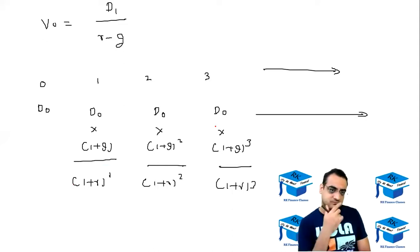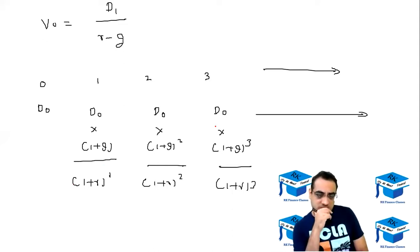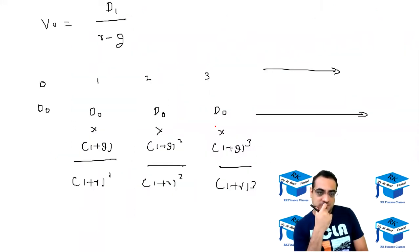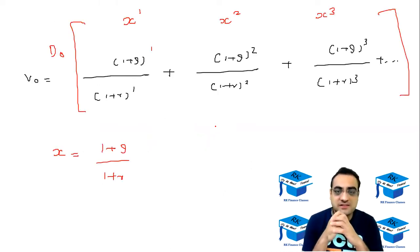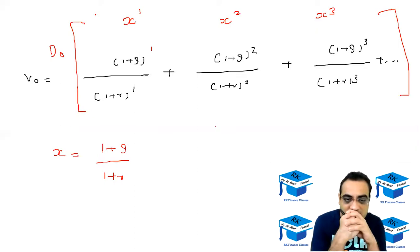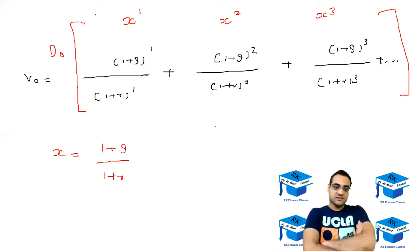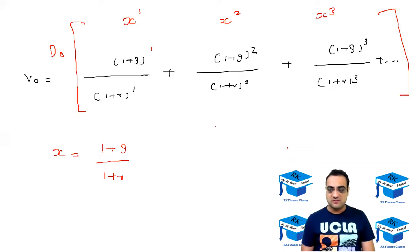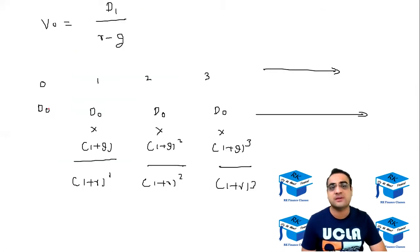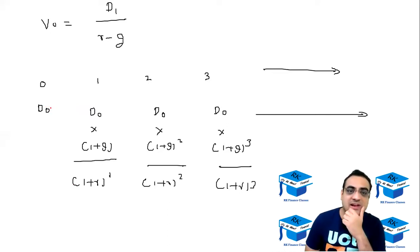There's a problem here — for a geometric progression formula to work, the series should be one plus x plus x squared plus x cubed, but the term x to the zero, which equals one, is missing. I need that one also. Since I've taken D0 out, D0 itself won't appear in the value calculation — value comes from what is in the future, not what is in the past.